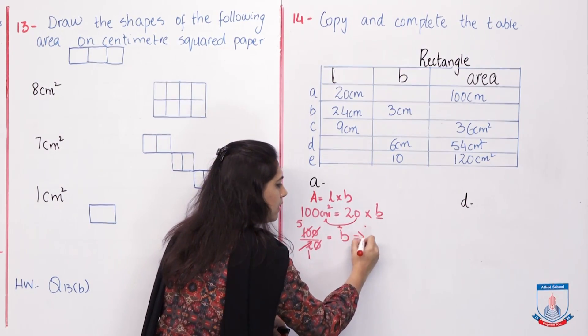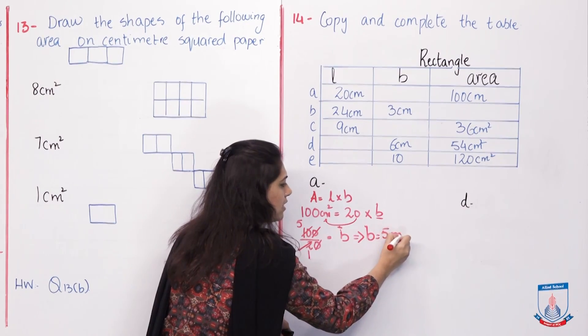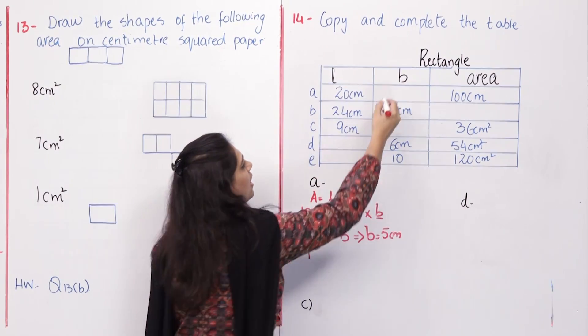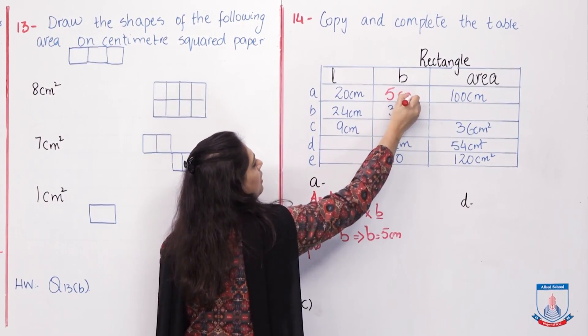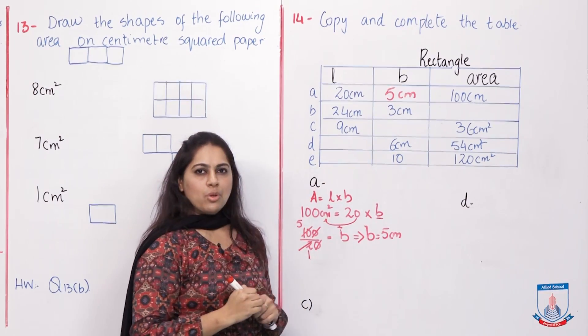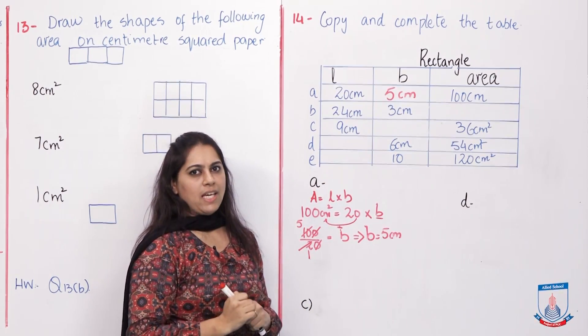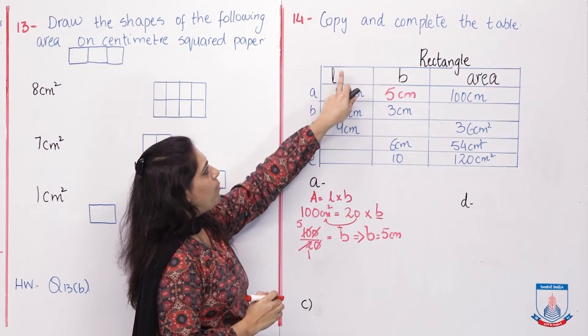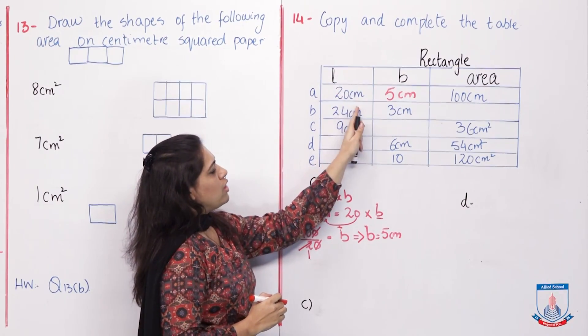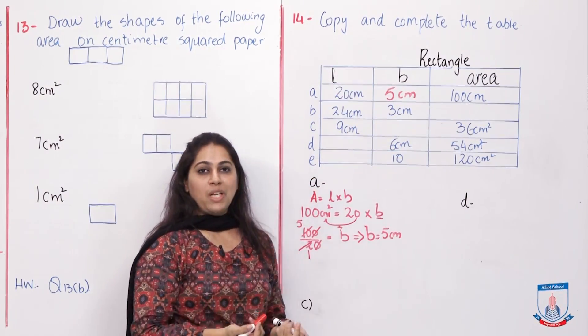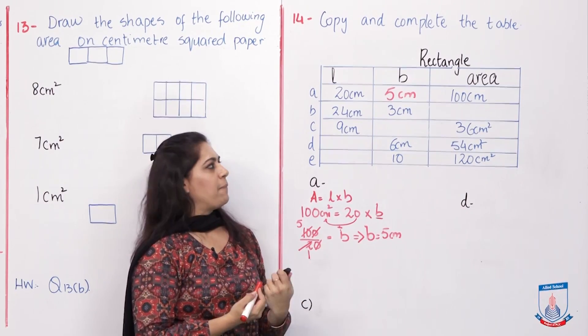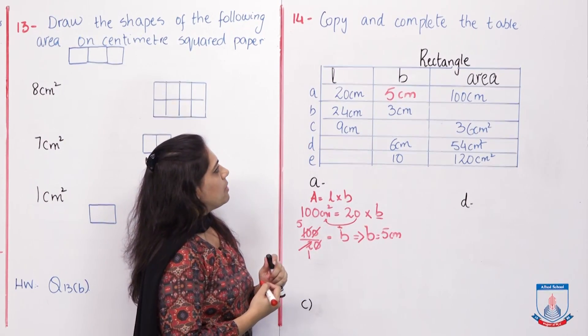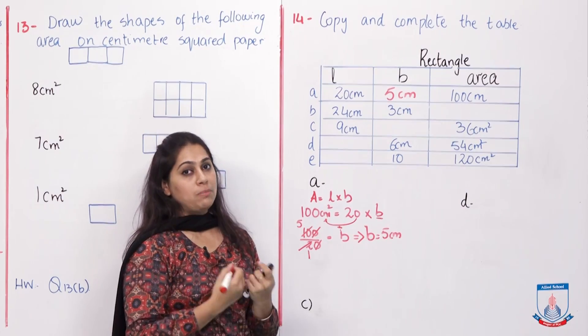So over here, it is 5 cm. We have to check if our area is correct or not. How do we check? The formula is length into breadth. 20 times 5 is 100. Absolutely, our answer is correct. Now let's go to question number B, which is very easy.